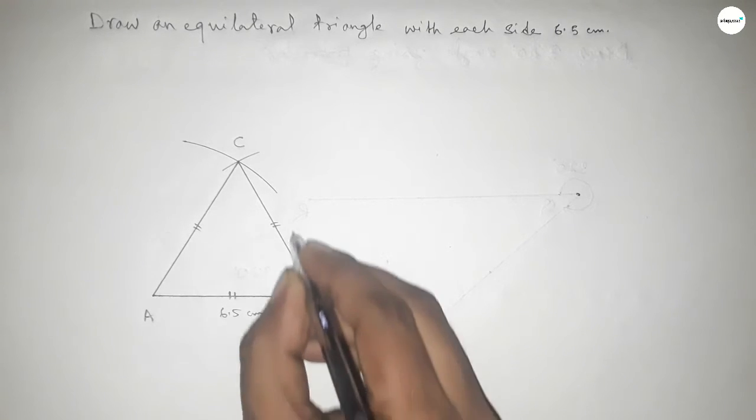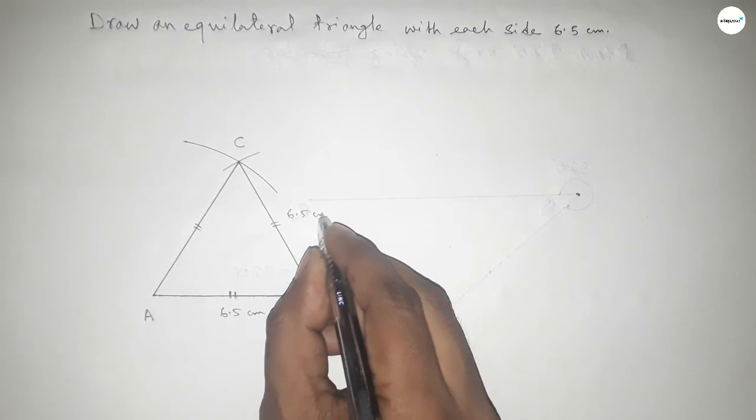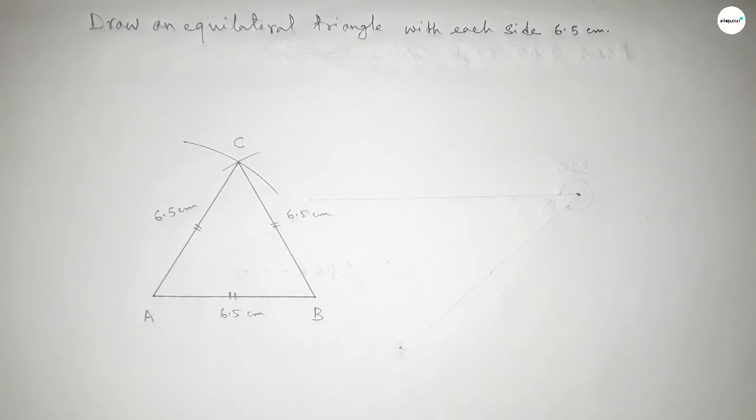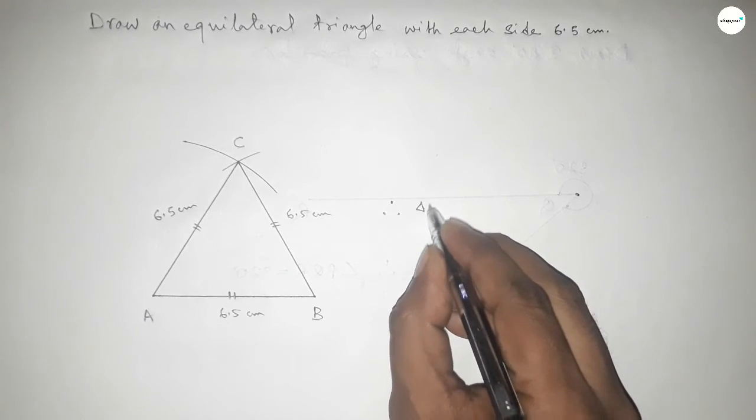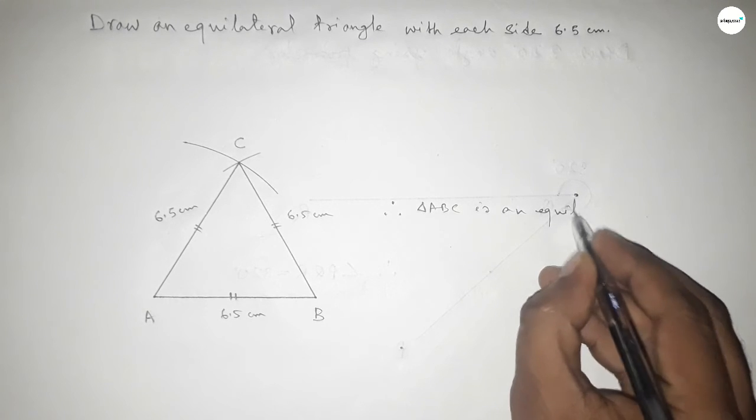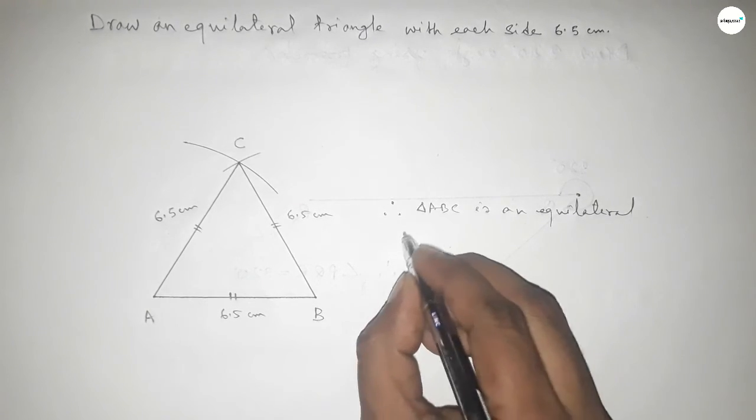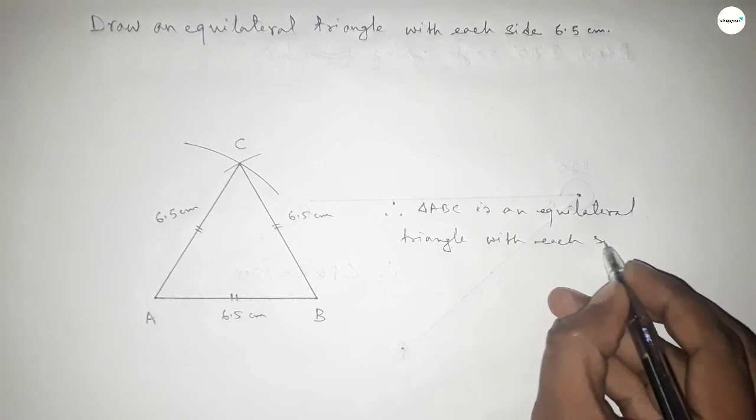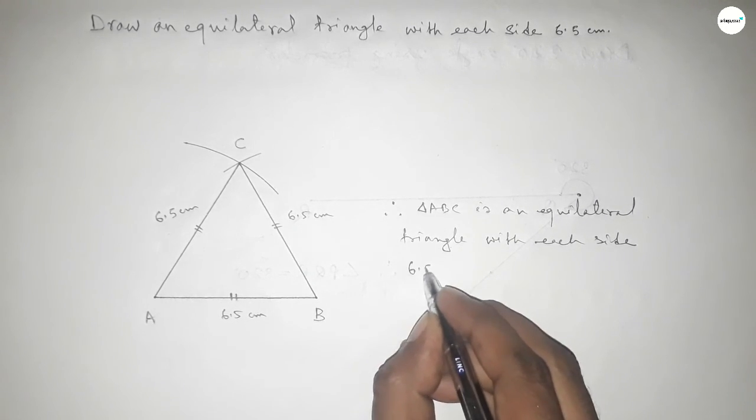This is 6.5 centimeter, this is 6.5 centimeter and this is also 6.5 centimeter. So therefore triangle ABC is an equilateral triangle with each side 6.5 centimeter. This is the process, that's all.